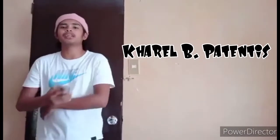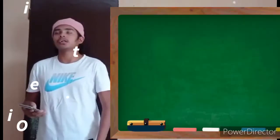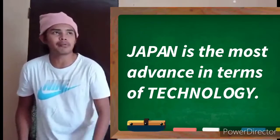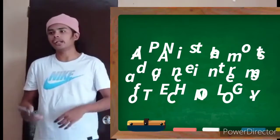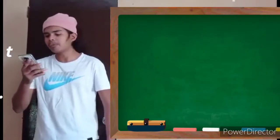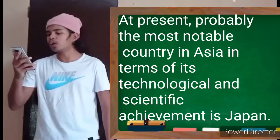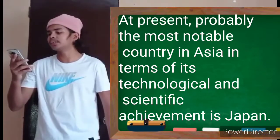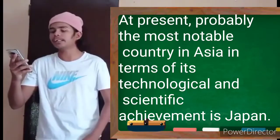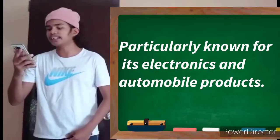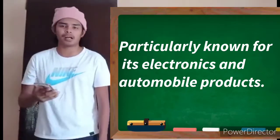Hi, my name is Cariel B. Patentis from Social Work Department. I will discuss the intellectual revolution that defines society. Revolution of Asia. Japan is the most advanced technology in Asia. At present, probably the most notable country in Asia in terms of its technological and scientific achievement is Japan, which is particularly known for its electronics and automobile products.